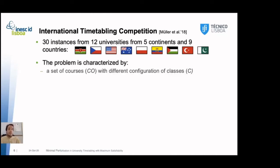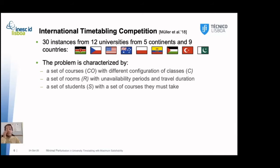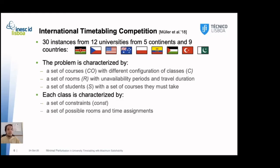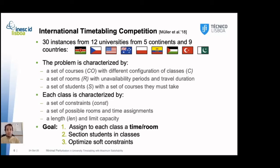The problem is characterized by a set of courses with different configurations of classes. A set of rooms with unavailability periods and travel durations between them. A set of students with a set of courses they must take. Each class is characterized by a set of constraints, a set of possible room and time assignments, a length and a limit capacity for the students that can attend. Please note that all rooms in the domain of class have enough capacity to seat all students. So, the objective here is to assign to each class a time and a room, to section students into classes and to optimize all soft constraints, including travel restrictions between rooms.